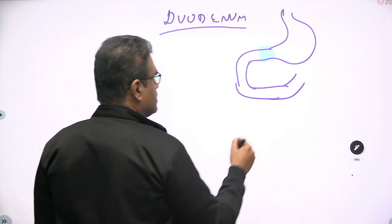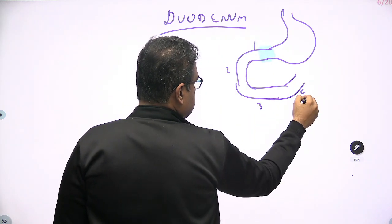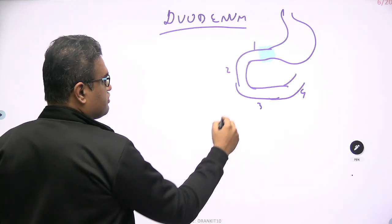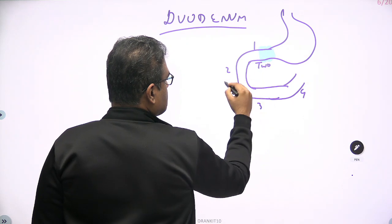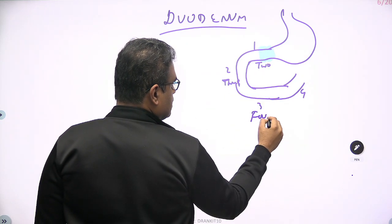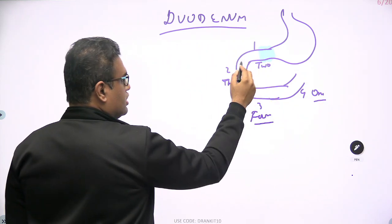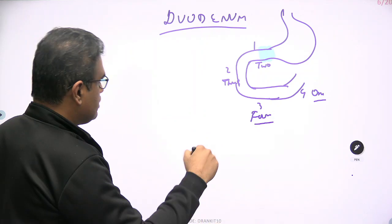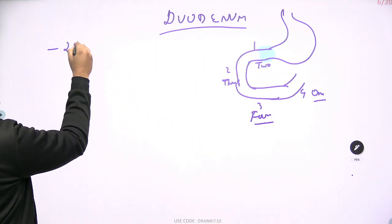The four parts of the duodenum and their lengths: the first part is two inches, the second part is three inches, the third part is four inches, and the fourth part is one inch. So total: 2 + 3 + 4 + 1 = 10 inches, meaning the total length of the duodenum is roughly 25 centimeters.